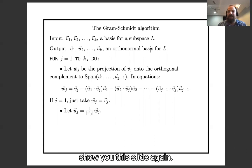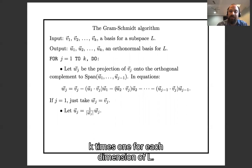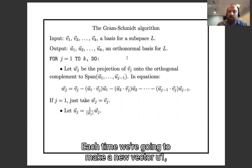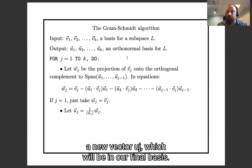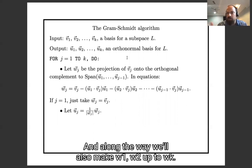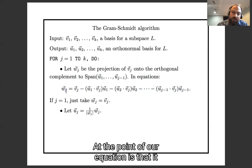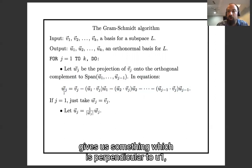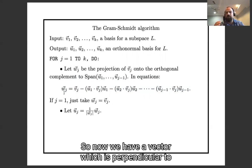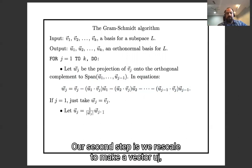And then finally, I just want to show you this slide again. Now that you've seen the example, we're going to go through our loop k times, one for each dimension of L. Each time we're going to make a new vector uj, which will be in our final basis. So we're going to make u1, u2 up through uk. And along the way, we'll also make w1, w2 up through wk. So the first thing we do is we compute wj by this equation. And the point of that equation is that it gives us something which is perpendicular to u1, u2 up to uj minus 1. So now we have a vector which is perpendicular to the u's that came before, but doesn't have length 1. Our second step is we rescale to make a vector uj, which does have length 1.